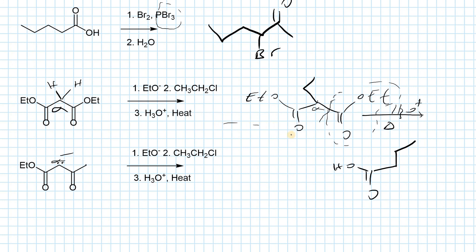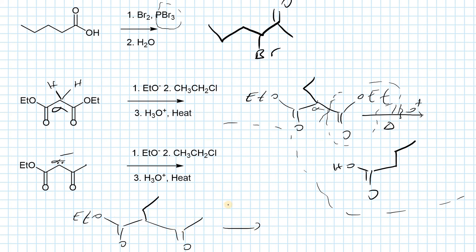Under acidic conditions with heat, we perform decarboxylation. The ester hydrolyzes to a carboxylic acid, and we lose the carboxylic acid fragment as carbon dioxide plus ethanol. Unlike malonic ester synthesis which gives a carboxylic acid, acetoacetate ester synthesis gives a ketone with the new alkyl group at the alpha position.